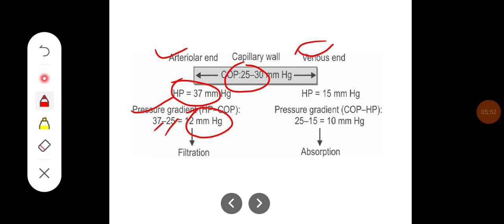Whereas at the venous end the hydrostatic pressure gradually reduces down to 15 mm of Hg. The osmotic pressure remains at 25 mm Hg. So the pressure gradient created here is around 10 mm of Hg which helps in drawing the blood from the interstitium back into the capillary. Hence the fluid is absorbed here and at the arteriolar end it is filtered.